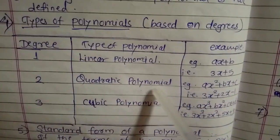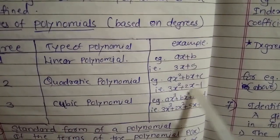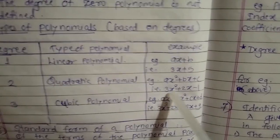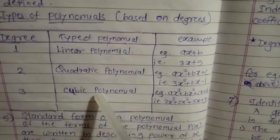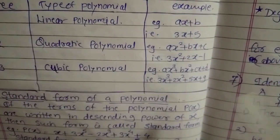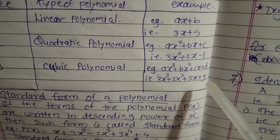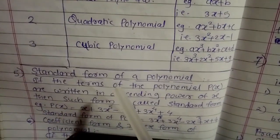If the degree of the variable is 2, it is called a quadratic polynomial. The standard form is ax^2 + bx + c, for example 3x^2 + 2x - 1 — the highest degree is 2. If the highest degree is 3, it is called a cubic polynomial, with standard form ax^3 + bx^2 + cx + d, for example 3x^3 + 2x^2 + 5x + 9.